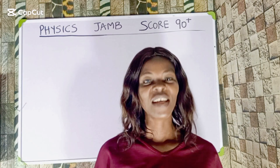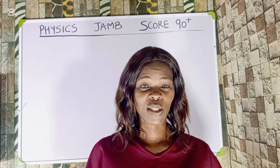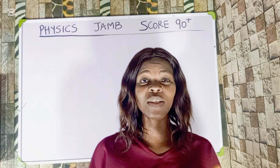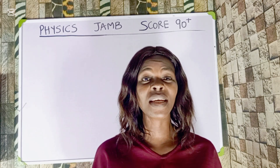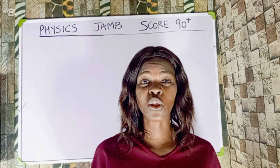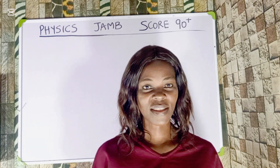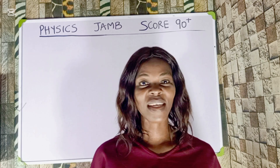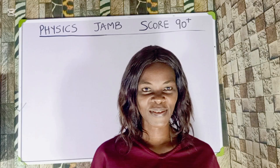Welcome back to today's episode. Scoring 90 and above is very simple, but you've not yet understood how JAMB normally asks questions and how to tackle physics questions with limited time. In this video I'm going to give you a detailed explanation of the most likely JAMB questions you are going to expect in this first coming exam. With no further ado, let's get right into the video.